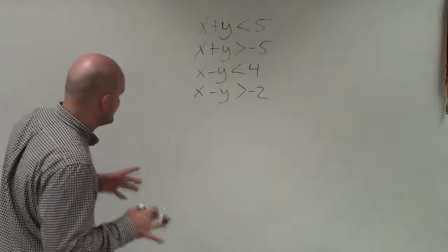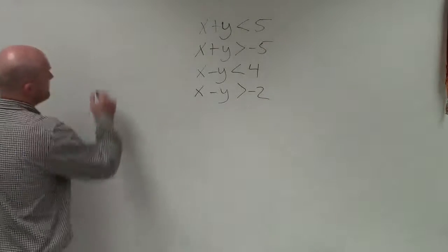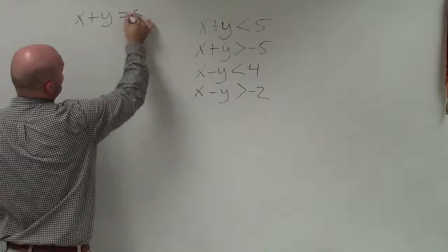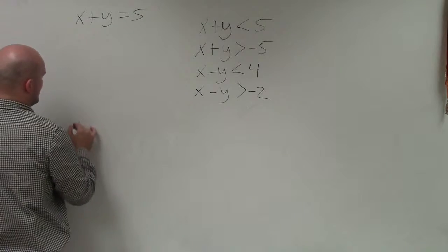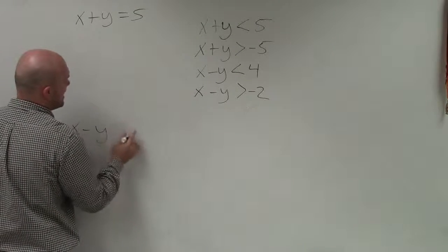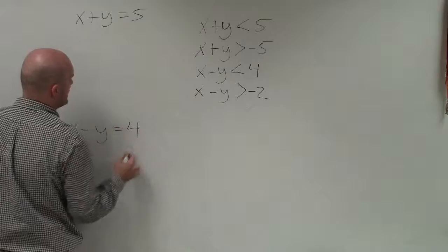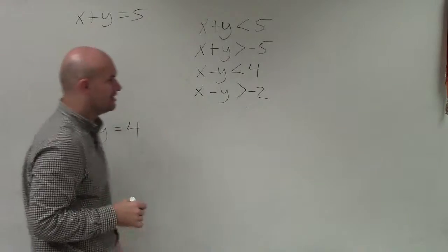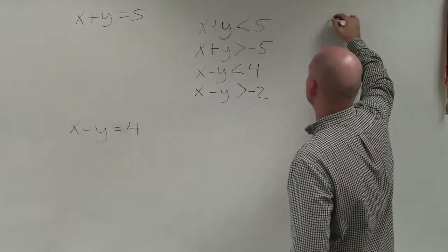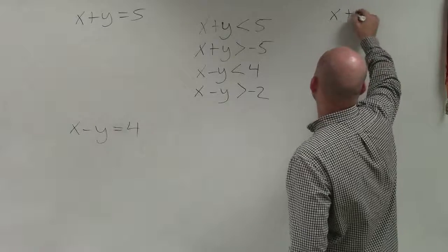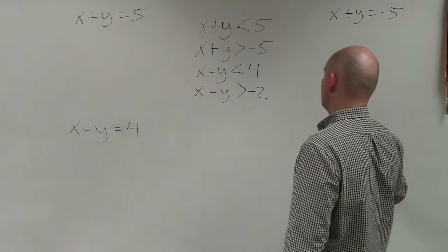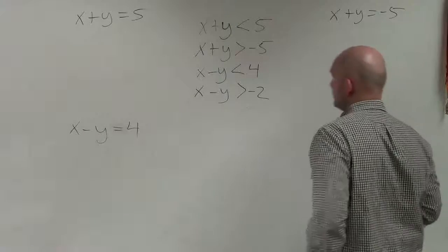What we're going to do first is graph them as equations, not as inequalities, because I want to get the boundary line graphed. Then we'll test them as inequalities to determine shading. So let's set up x plus y equals negative 5 and x minus y equals negative 2.